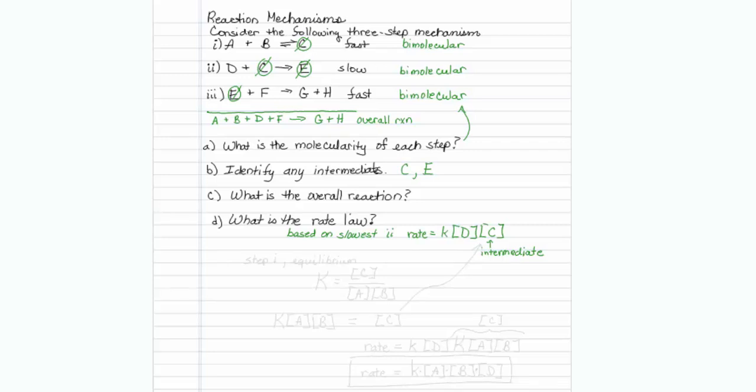The assumption is that the fast step occurs more quickly than the slow one, obviously, so that materials build up and it reaches equilibrium. So step one is in equilibrium.